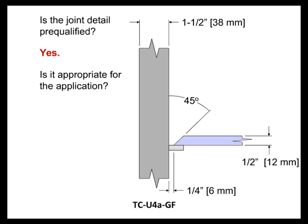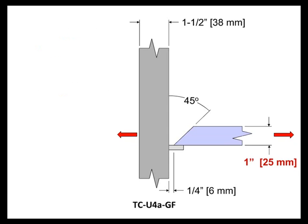The next question is: is the joint detail appropriate for the application? Let's assume this is a tensile joint. Our question is whether it is appropriate for that tensile kind of application. There's nothing to give us any reason for concern on that particular detail — we should be good to go with a weld at that location.